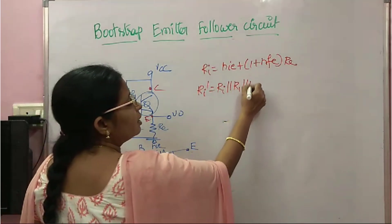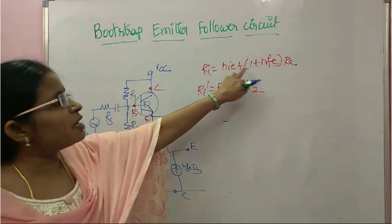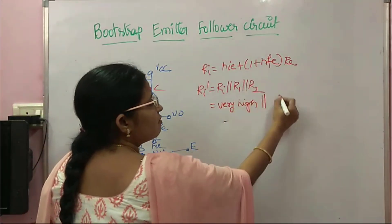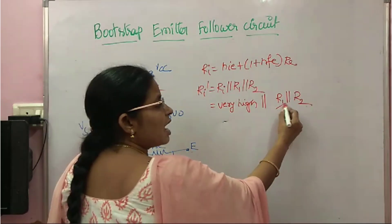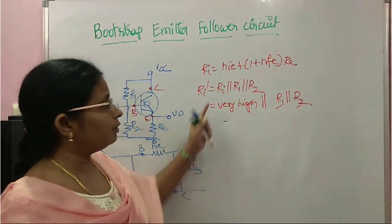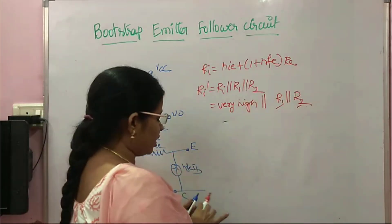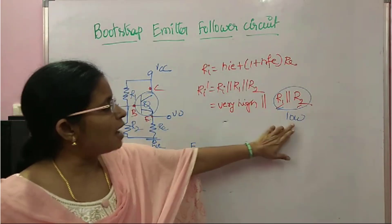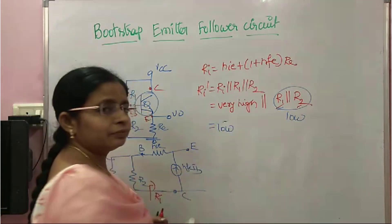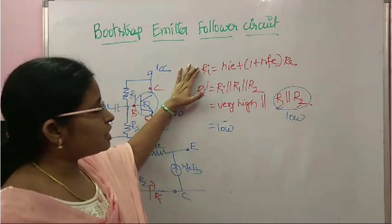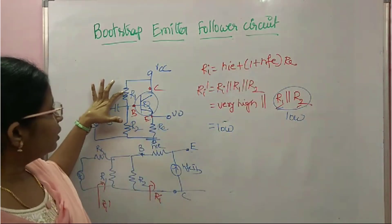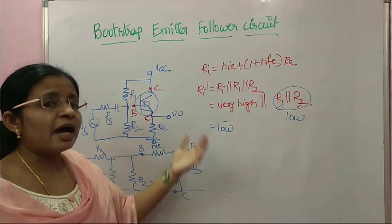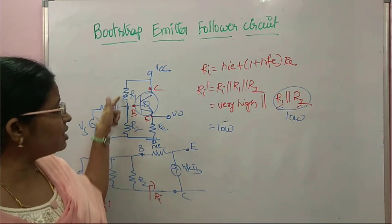Ri' is Ri in parallel with R1 in parallel with R2. Now, hie + (1 + hfe)·Re is very high — Ri is very high — but it is in parallel with R1 and R2, and those resistors are much lower than the input impedance. So their parallel combination becomes low. A very high resistance in parallel with a low resistance gives a low value. So the input impedance becomes very low because of the biasing resistors R1 and R2, and we can't use the CC amplifier for high impedance applications.